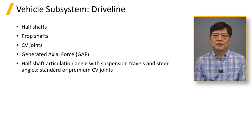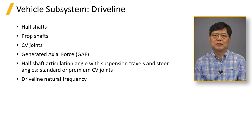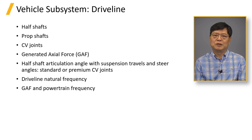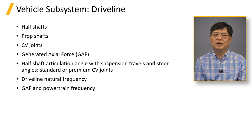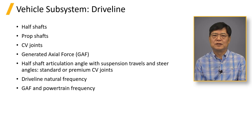Half shafts have a soft torsional stiffness of about 200 Nm per degree for passenger vehicles. The engine inertia connected to wheels and tires by the driveline manifests a torsional vibration with a natural frequency under 10 Hz, sometimes causing torque surge and power hop. GAF from the CV joint might excite the powertrain in the lateral direction at speeds related to the phase angle between the left-hand side and right-hand side CV joints. In-phase GAFs from both sides cancel out the excitation, but out-of-phase GAFs produce worse lateral excitation to the powertrain.